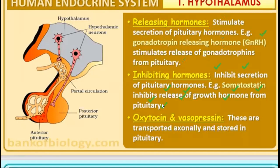Inhibiting hormones inhibit the secretion of the pituitary hormones. When somatostatin is produced, it stops the pituitary from producing the growth hormone. Oxytocin and vasopressin are transported to and stored in the pituitary. They are produced by the hypothalamus but stored in the pituitary, and when required, the pituitary releases them. This was all about the hypothalamus.